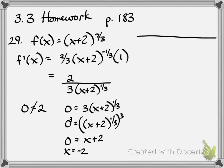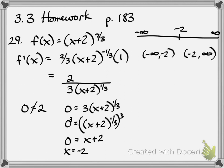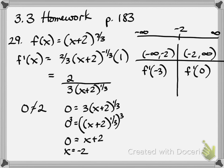Now we check the critical number on our interval from negative infinity to positive infinity. We have the intervals from negative infinity to negative 2, and from negative 2 to infinity, and we'll check test values in the derivative. A number in the first interval is negative 3, and in the second interval we'll use 0 — always use 0 if you can.